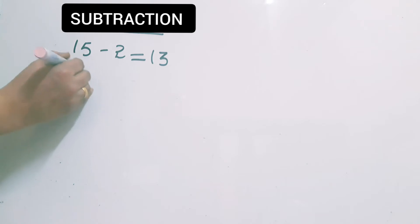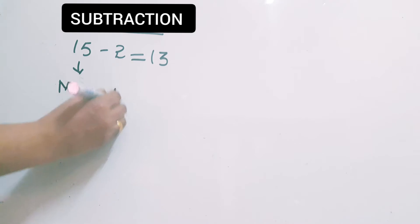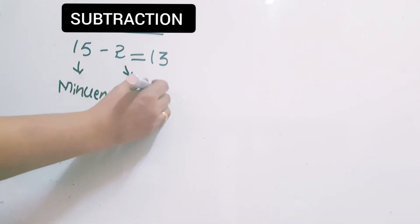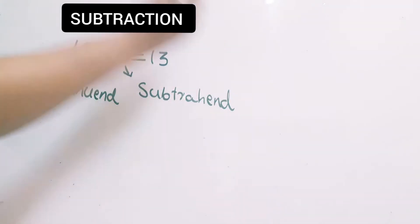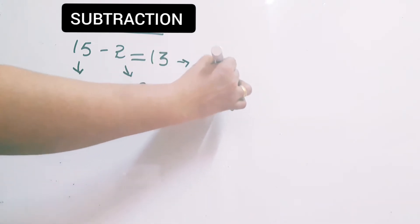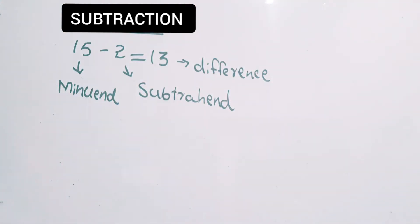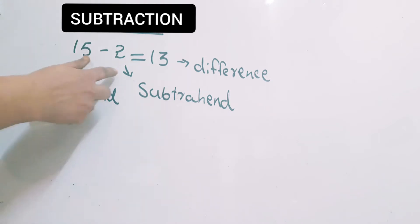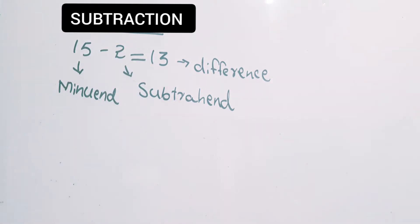This is called the minuend — I have already explained this in another video, please watch it. This is called the subtrahend, S-U-B-T-R-A-H-E-N-D. And this is called the difference — the answer you get after subtraction. The minuend is the number from which we subtract. The subtrahend is the number which is subtracted. The result we get after subtraction is called the difference.